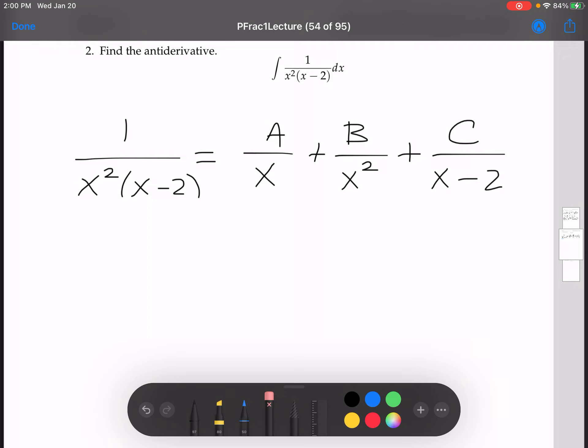Now we're going to multiply both sides by this denominator, x squared times x minus 2. Think about if you were to multiply the left-hand side here by this denominator, that would just clear that denominator.